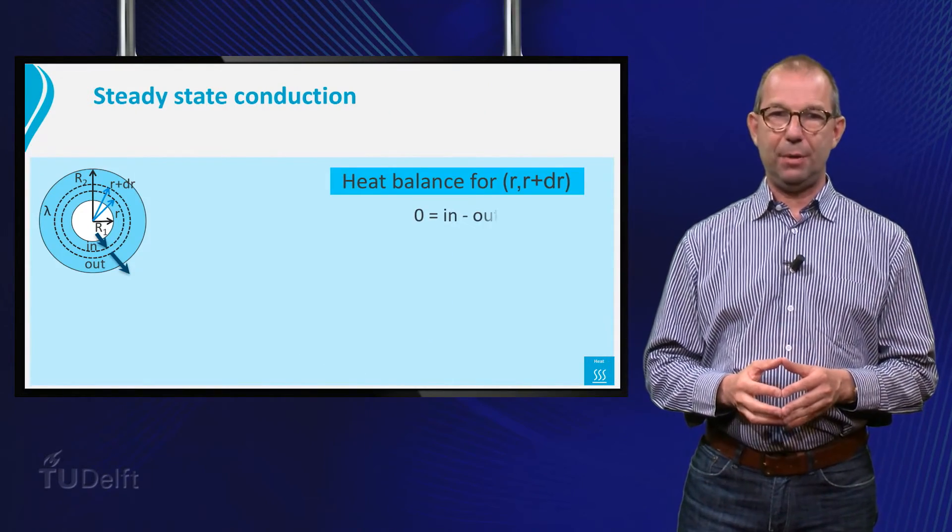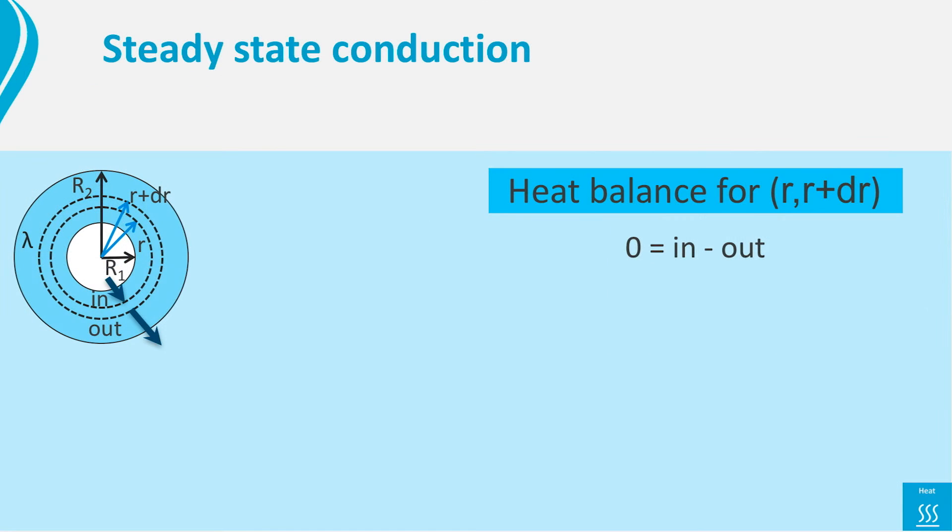Again, we set up a steady state heat balance for the control volume between the dashed rings. It is a steady state, without production in the control volume, thus we have 0 is in minus out. Or in mathematical terms, 0 is phi_q at r minus phi_q at r plus dr.